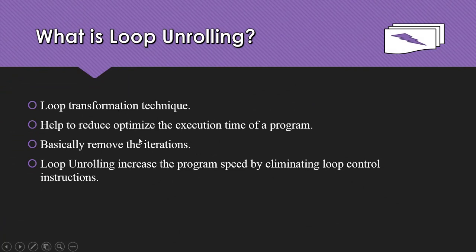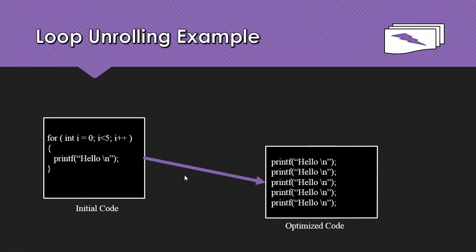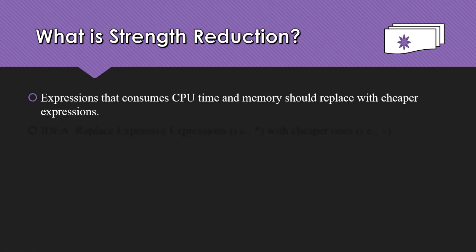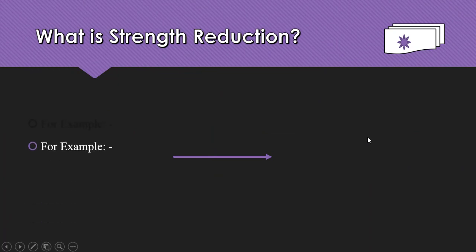Next is strength reduction. Expressions that consume CPU time and memory are replaced with cheaper expressions. For example, this is an expensive expression and this is the cheaper one — we replace multiplication with addition, since multiplication is expensive and addition is cheaper.